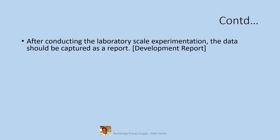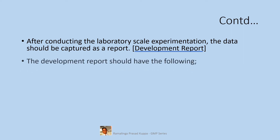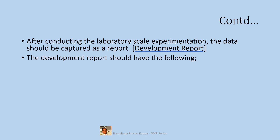After conducting the laboratory scale experimentation, the data should be captured as a report — called the development report. After carrying out successful experimentation, a development report should be made with all the details. The report should have the following, based on the characteristics of the process and product.